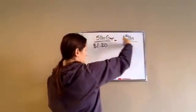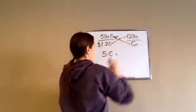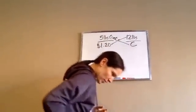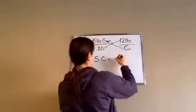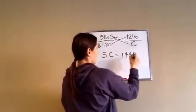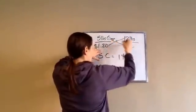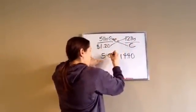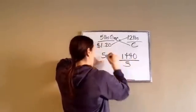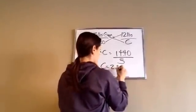So we do it just like normal, five grapes. So 5C, 5 times C equals 12 times 120. I'm trying to do this all in my head. It's going to end up being 1440. And so then once we multiply those and multiply that, then this says 5 times what equals 1440.